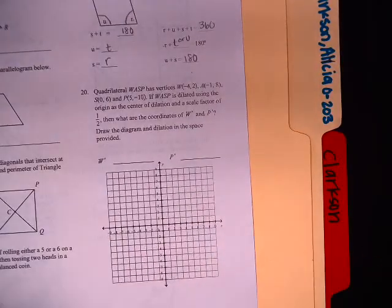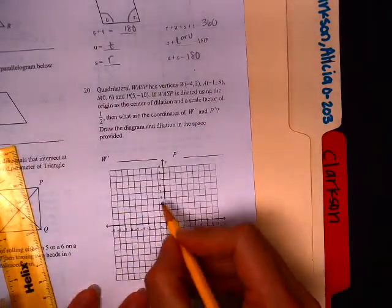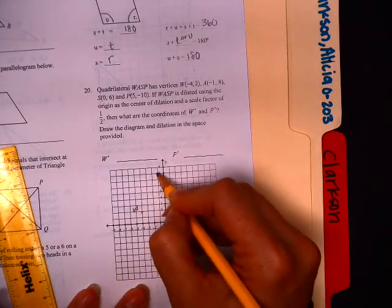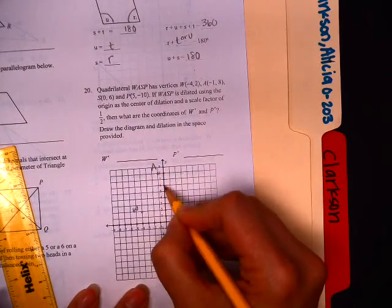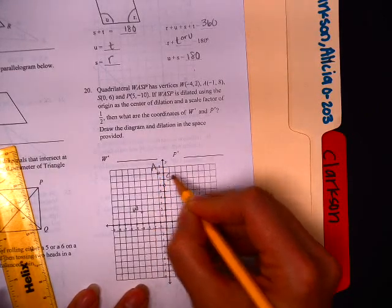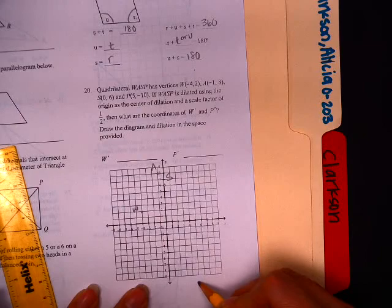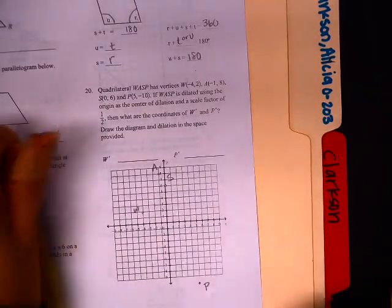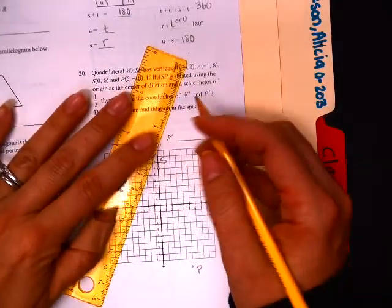Alright, so let's look at number 20. At 20 we have some vertices. So we have negative 2, negative 1, 8, 0, 6. And we have 5, negative 10. So that's what we've got as a quadrilateral.